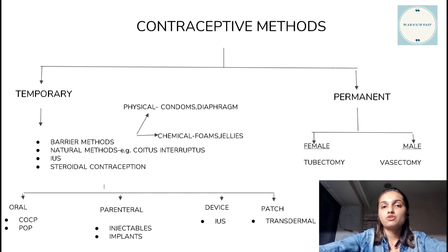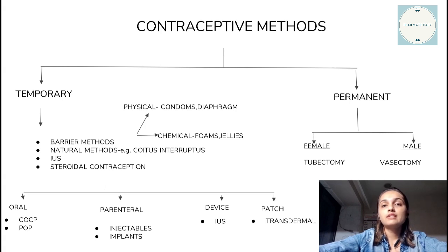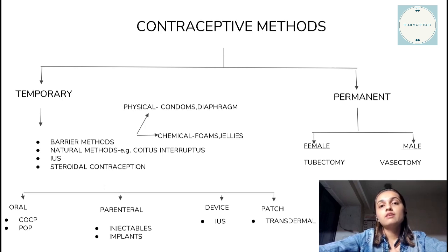The next method is steroidal contraception, which includes the hormones estrogen and progesterone. The first type is the oral method, which includes the combined oral contraceptive pills and the progesterone-only pills. The next is the parenteral method, which includes implants and injectables. The next is the intrauterine system, which is Mirena — this includes levonorgestrel released every day. The last one is the transdermal patches.